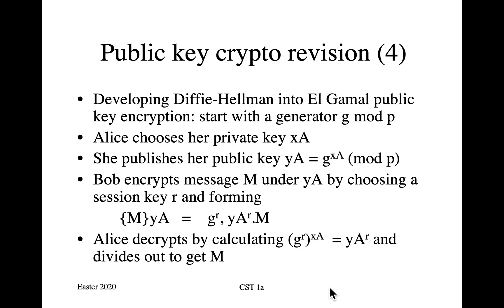The next point is that Alice and Bob don't have to be both present at the same time. With only a very small modification, you can turn this into a public key encryption scheme, whereby Bob can send a message to Alice given knowledge of her public key, which could be stored in a directory or in a certificate on a website. This is sometimes known as El Gamal public key encryption, sometimes as Diffie-Hellman encryption. You start with a generator G modulo a large prime P, as before.